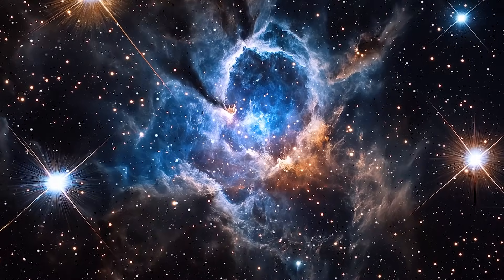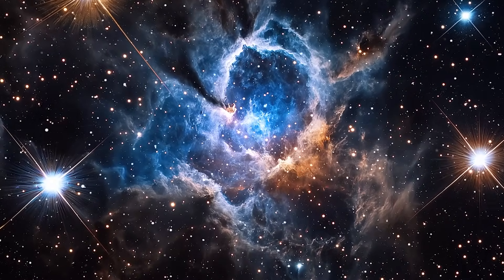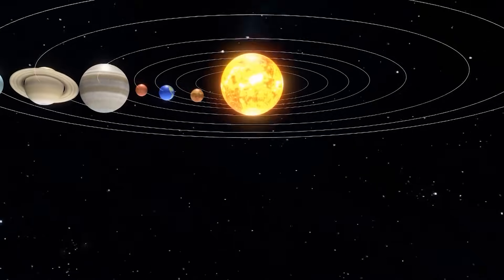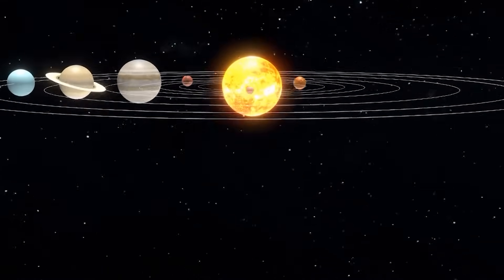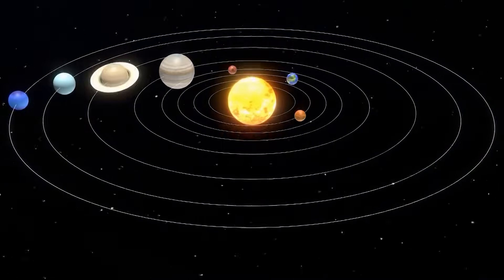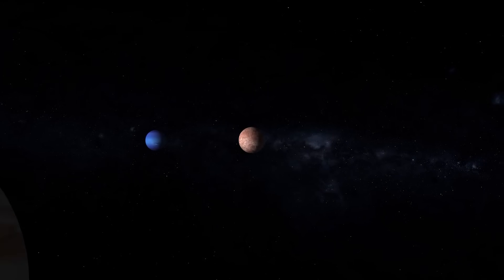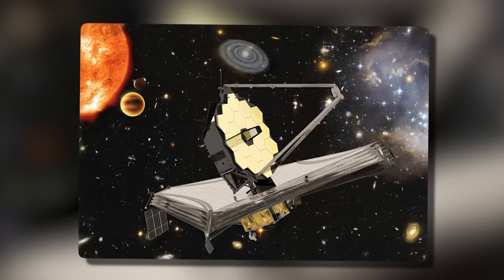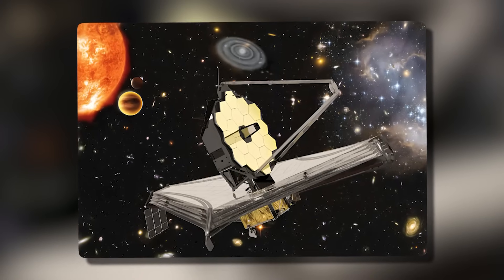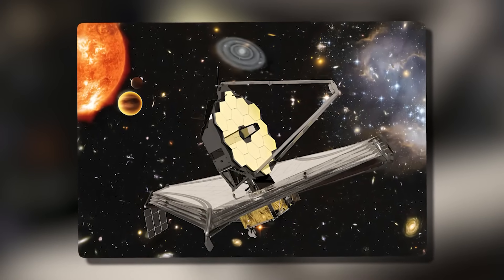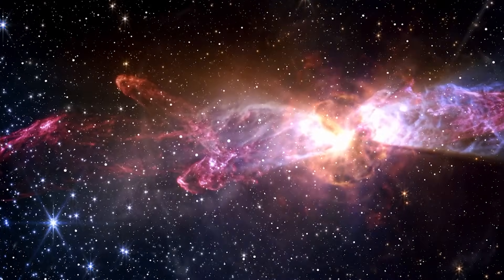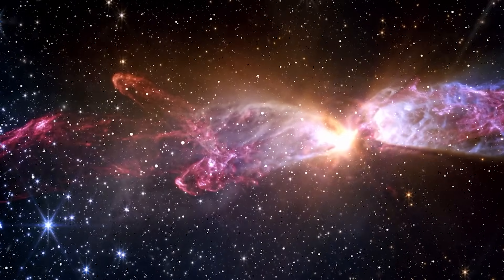The energy outputs observed by Webb also throw a wrench into the presumed energy budgets of outer planets. Neptune is farther from the Sun than Uranus, yet it radiates more internal heat. No one has been able to explain this discrepancy fully. Now, with Webb detecting previously unseen energy spikes and temperature fluctuations, the mystery deepens. Where is this energy coming from? Is Neptune undergoing some internal transformation?